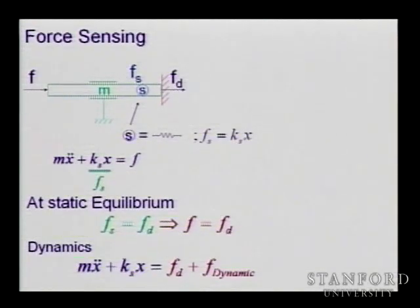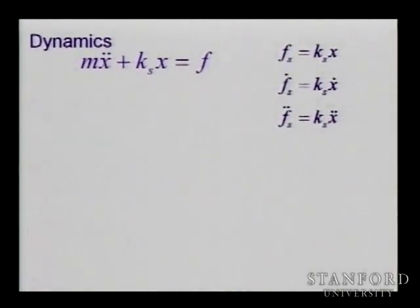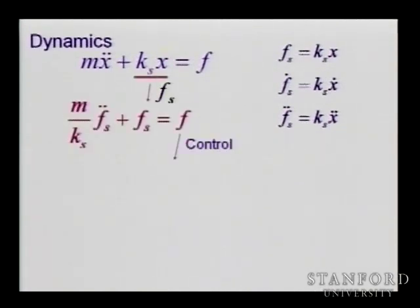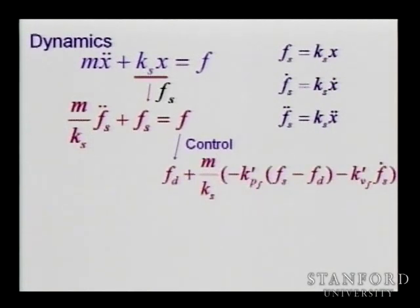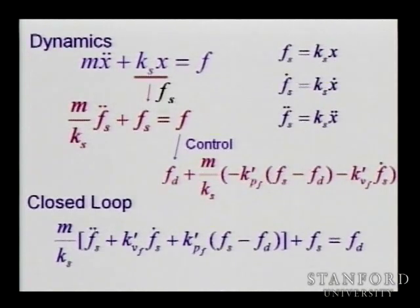We can use the relation between X and F to rewrite the equation in terms of force control. Taking the second derivative in terms of forces, the stiffness appears in the equation, and once we close the loop, we get the responses seen on the video. When we push, the feed-forward term acts and the sensor error produces torques to move the robot and reduce the error. You have a proportional and derivative term and can achieve a closed loop that minimizes the error.